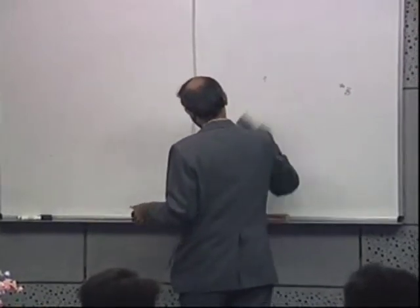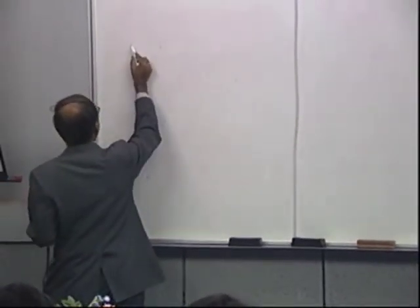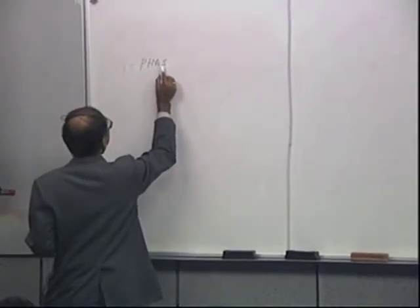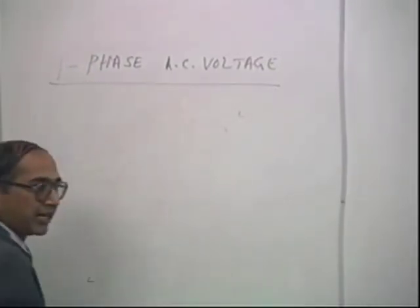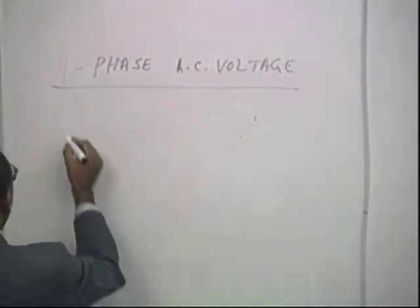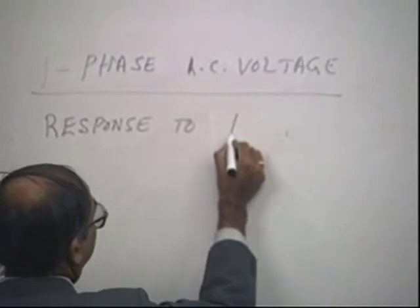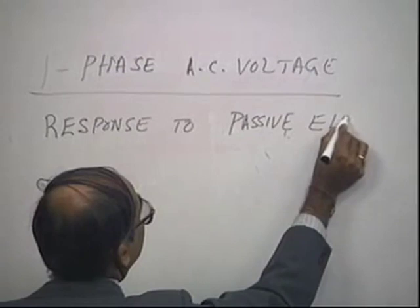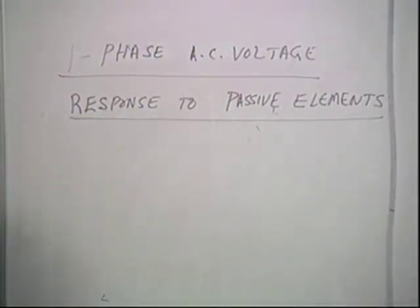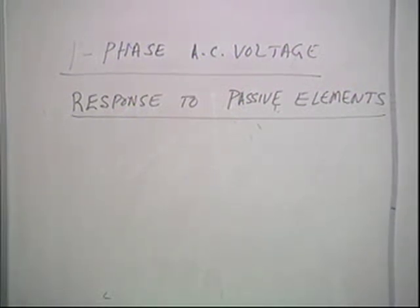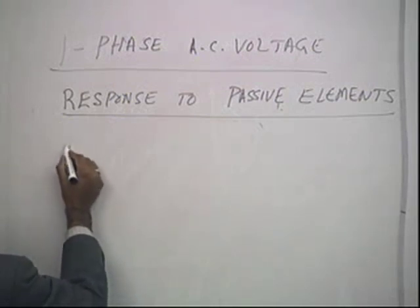Now let us understand the response of AC voltage in a single-phase AC system. We have always said: if you apply a voltage, a current will result. For current to result, there must be a network. So we look at the response to standard passive elements. This is a matter of completeness — we want to know how different elements respond when AC voltage is applied. The simplest element is the resistance.